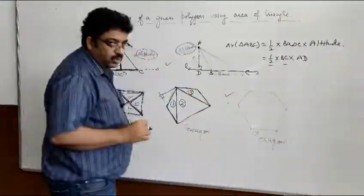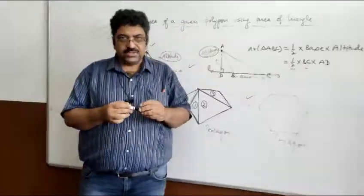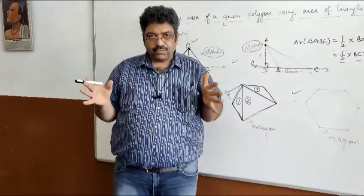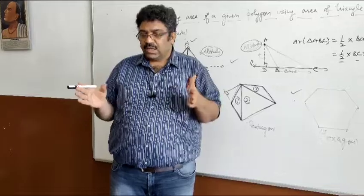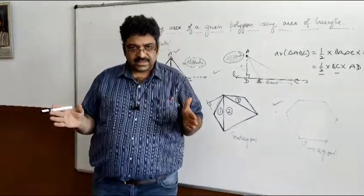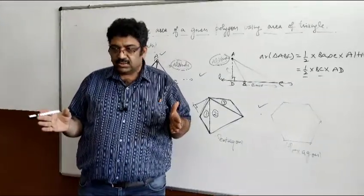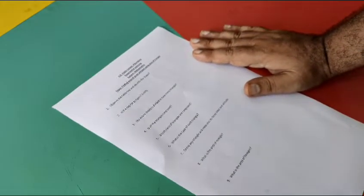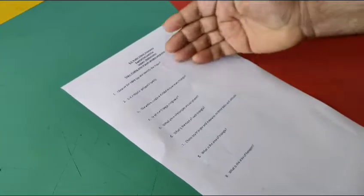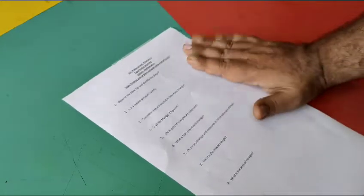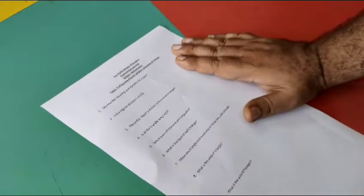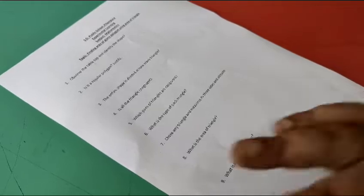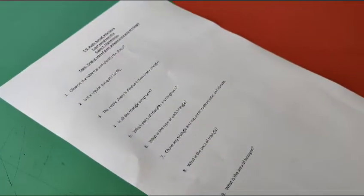Similarly, you have to think about the hexagon. Now we will proceed to the activity. We will perform the activity of finding the area of a hexagon on the surface of a hexagonal table. There is a worksheet with some questions written on it. You will read these questions and find out the area of the hexagonal surface of the table.